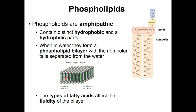They form a bilayer rather than a single layer because this creates a completely hydrophobic environment inside where the non-polar tails are very stable. With only a single layer, the tails would be in contact with water on one side and would be very unstable. With a phospholipid bilayer, the tails are completely insulated from water on both sides — the outside of the cell on one side and the cytoplasm on the other. The type of fatty acids present affects the fluidity — how well the tails pack and move relative to each other — which will be discussed in more detail when we cover the cell membrane.